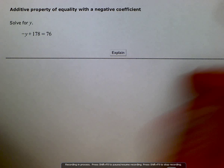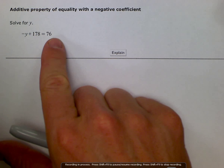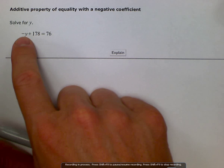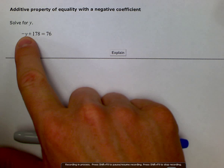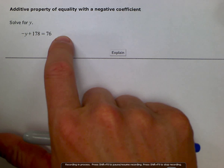We can either move 178 over to the right here and then divide by negative 1, which is technically what the coefficient is. This is saying negative 1 times y. Or we can move our y over so that it's positive and then move our 76 over.